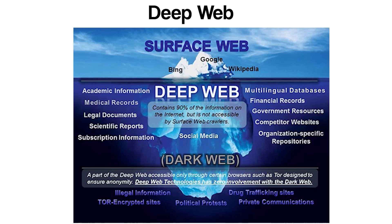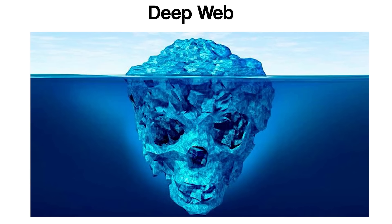Unlike the Surface Web, the Deep Web consists of web content that is hidden from search engine crawlers. This layer includes all the online data and services that are not indexed and therefore do not appear in typical search engine results. However, contrary to popular belief, the Deep Web is not inherently secretive or illegal. It simply contains information that is behind logins, paywalls, or other access controls. The majority of content on the Internet actually resides within the Deep Web.